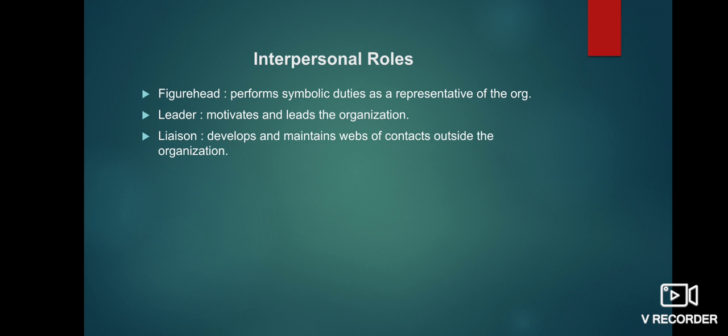The second role is leader. In the leadership role, what does the leader do? The leader basically motivates and inspires the employees, gives them guidelines, and leads them. The leader takes care of employees and coaches them, because ultimately the success of any organization depends on its employees. So it is very important to motivate, inspire, and take care of the employees.